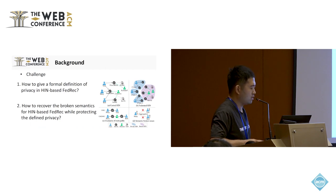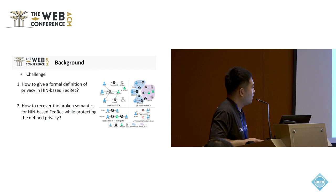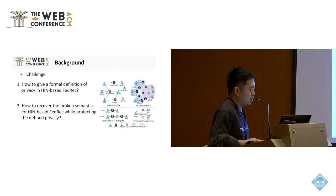However, this task is non-trivial due to the following two challenges. The first challenge is how to give a formal definition of privacy in HIN-based federated recommendation. We suggest that the HIN is divided into multiple private HINs stored on the clients and a shared HIN stored on the server. The shared knowledge in the shared HIN can be shared across clients, but may also expose users' privacy, so we should carefully consider the realistic privacy constraints.